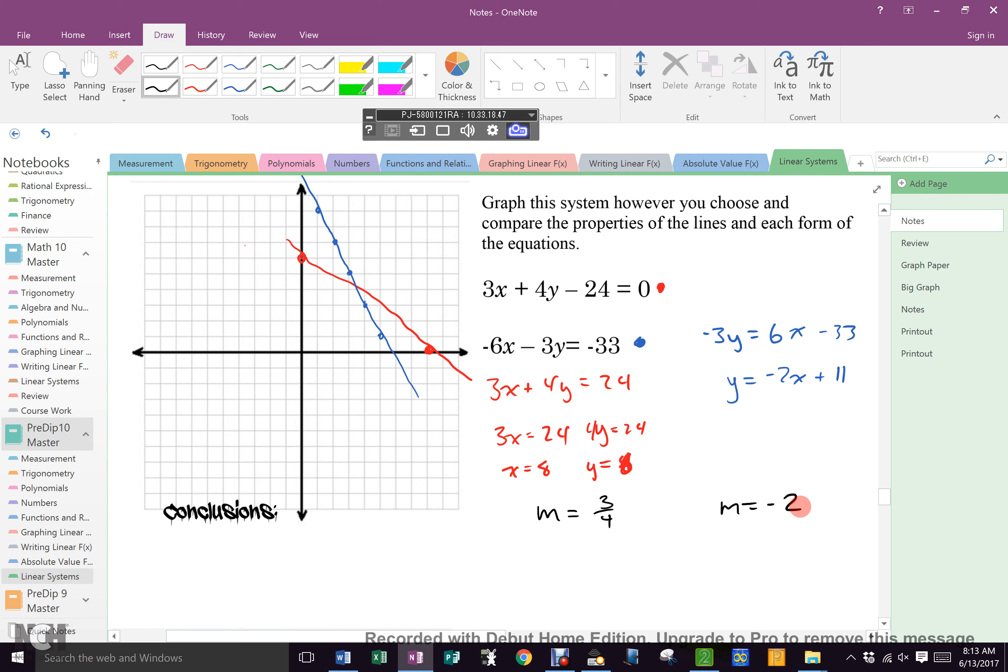All right, we have graphed them however you chose. You can see that they intersect and you can see that they have different slopes, right? What conclusions about this system can you come to once we have graphed them? What are some things you can tell me about this system?